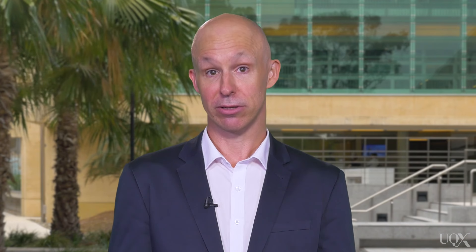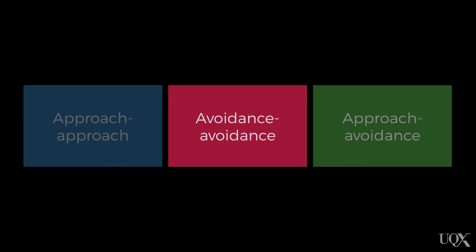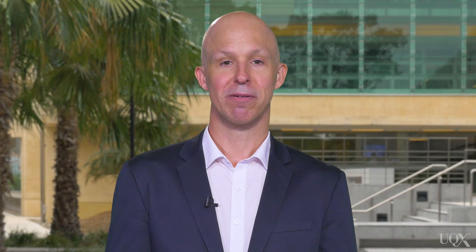There are actually three different types of conflict: the approach-approach, the avoidance-avoidance, and the approach-avoidance. We'll go through some examples to illustrate them. The first type is the approach-approach conflict, and not all of these conflict types are equally stressful.